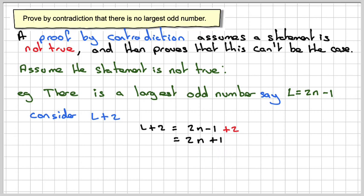Which is also an odd number, because remember N was an integer to begin with, and is actually larger than the original largest odd number.